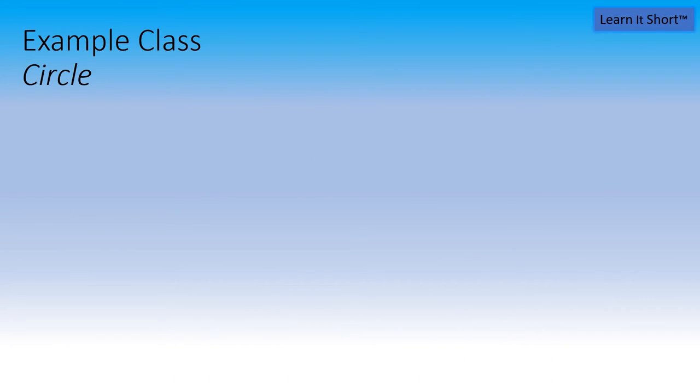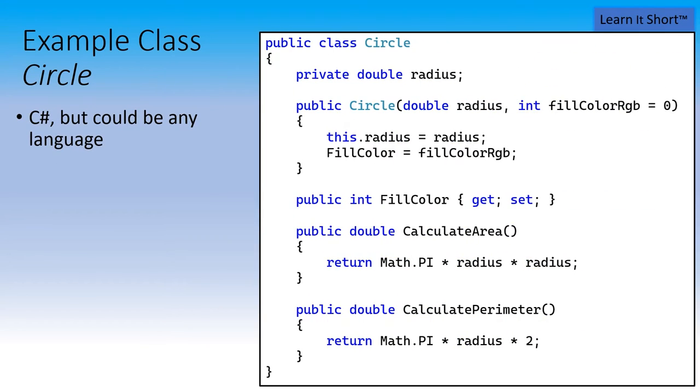For the point of our discussion, let's take a look at a class called Circle. We could write this in any language. We put it in C#, but you could practically convert this to Java or C++. In our class, we have a circle and it has a radius. We've got a constructor function that takes a radius and a color. We also have a property, a getter and setter for that fill color, and the circle implements two methods, calculate area and calculate perimeter.